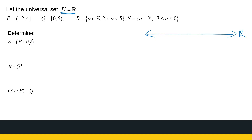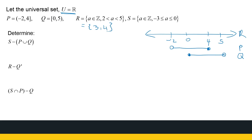P is from minus 2 to 4. Minus 2 is excluded, 4 is included. Q is an interval from 0 to 5 — 0 is included, 5 is excluded. R is all integers between 2 and 5, which gives us just 3 and 4. And S is all the integers from minus 3 to 0, so that is minus 3, minus 2, minus 1, and 0.